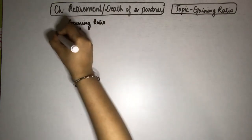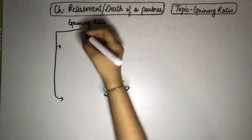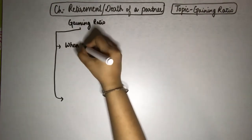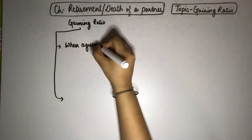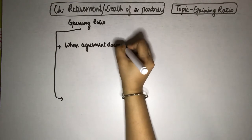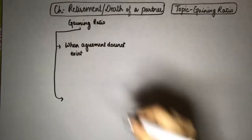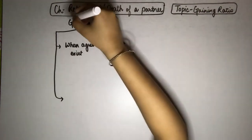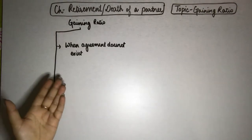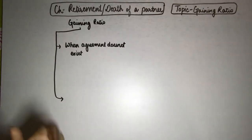First case: when agreement doesn't exist. Yaani ki agar wahan pe koi agreement nahi hai, kuch bataya nahi gaya ki kis ratio mein aap gain karoge, remaining partners ki kya ratio hogi — toh jo unki pehle ratio hogi, before the retirement, woh hi unki ratio baad mein bhi rahegi. Kyunki hamare paas koi agreement nahi hai.